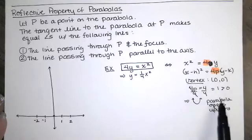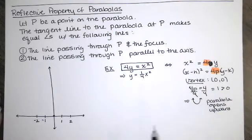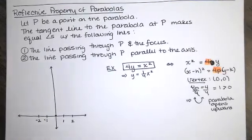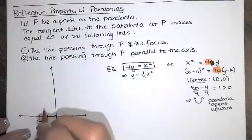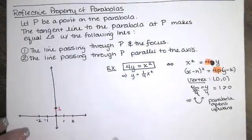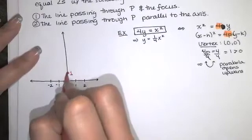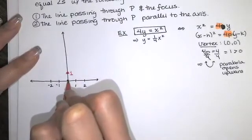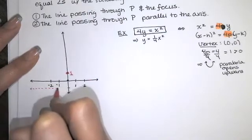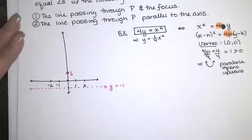We've got the vertex. The focus is the absolute value of P units from the vertex, and this parabola opens upward, so our focus is at y equals 1. I go the same number of units — absolute value of P — below the vertex to get a point on the directrix. So our directrix here is y equals negative 1.